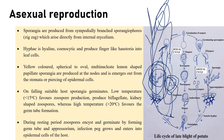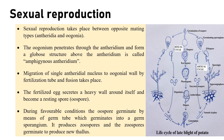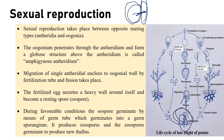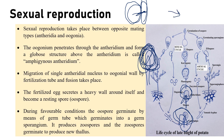Sexual reproduction is of oogamous type where the female reproductive organ is called oogonium and the male reproductive organ is called antheridium. They come in contact, a fertilization tube is formed, exchange of gametes takes place, and the zygote is formed. An important feature: the female reproductive organ — the oogonium — passes through the antheridium and forms a globose structure above the antheridium. This is called amphigynous type of antheridium — very important for examinations.